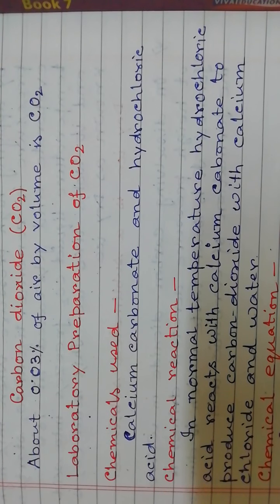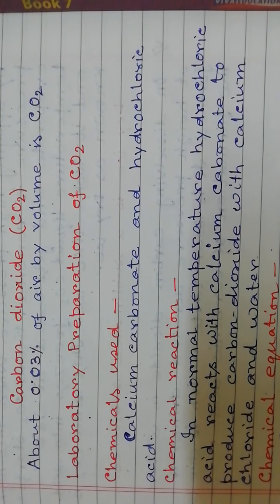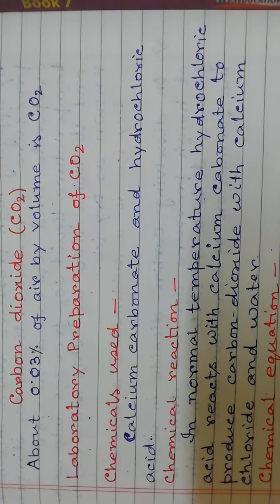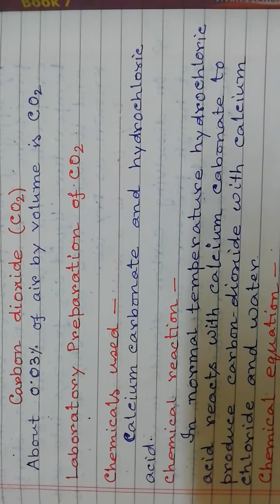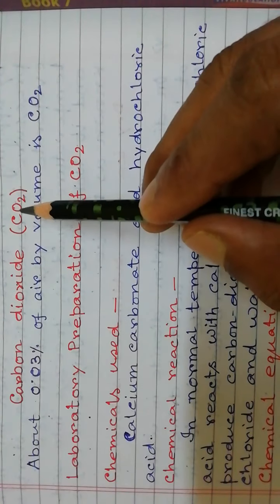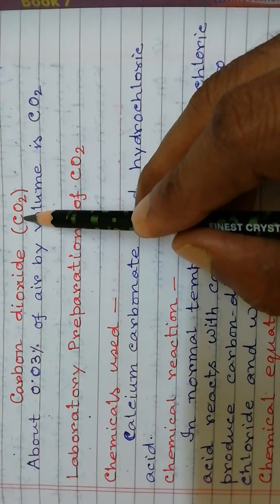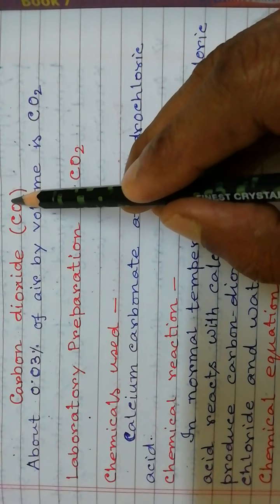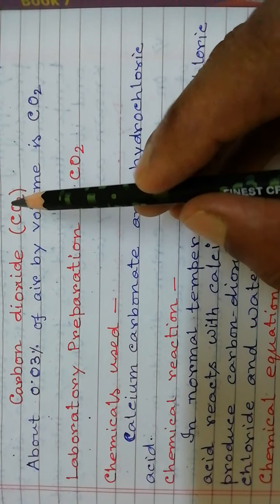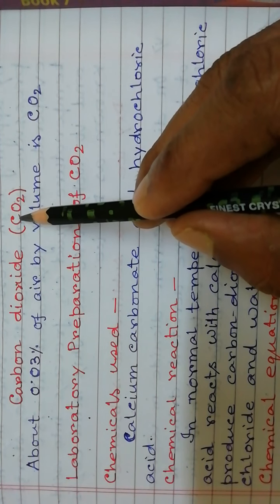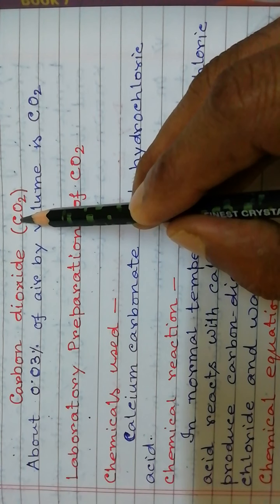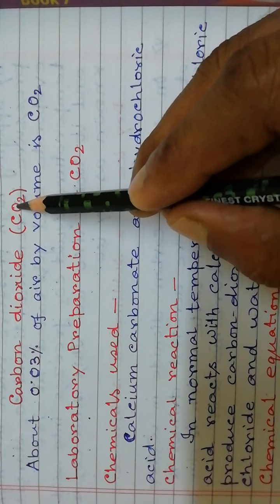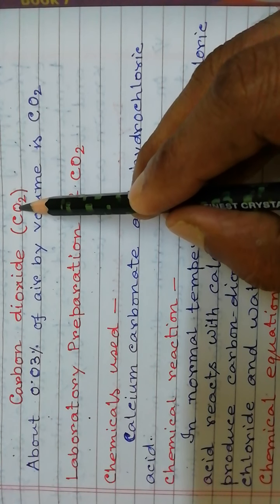Thank you everyone. Today I start a new chapter for Class 7 — it is Carbon Dioxide. Its chemical formula is CO2. One molecule of carbon dioxide contains one atom of carbon and two atoms of oxygen.